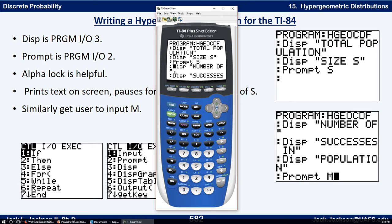So it's asking the user to put in the total population size, and it's telling us it's storing it as letter S. Now what else do we need to put in? Well display number of, number of, display successes in, and then population. That's going to take up about three lines to do that. So number of successes in population. And then say prompt M. Remember prompt is program IO2.